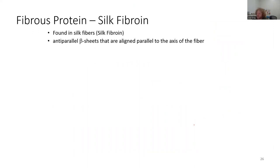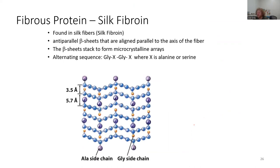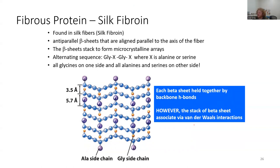Silk fibroin is found in silk fibers, and it's a series of anti-parallel beta sheets aligned parallel to the axis of one fiber. The beta sheets stack to form microcrystalline arrays. They consist of an alternating sequence of glycine followed by an amino acid — glycine, amino acid, repeating — where that X is either an alanine or a serine, giving glycine-alanine or glycine-serine repeats. All the glycines end up on one side and alanines on the other. Each beta sheet is held together by backbone hydrogen bonds, and the stack of beta sheets associates through van der Waals interactions.